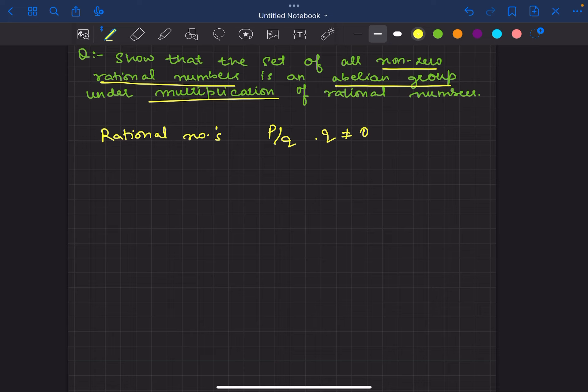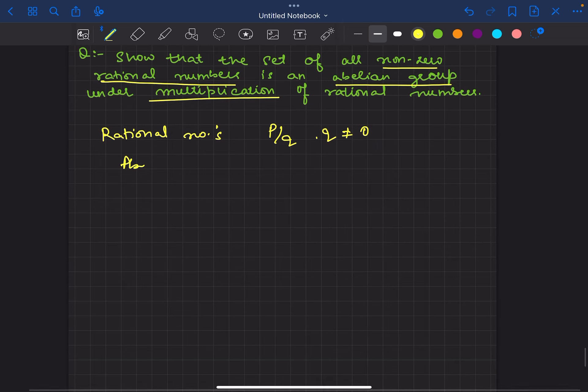The question is, what is Abelian? Abelian means: closure, associative, existence of identity, existence of inverse, and commutative property. These are all the properties.